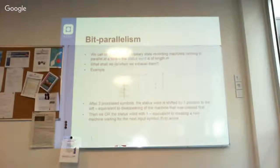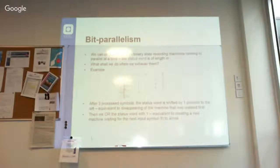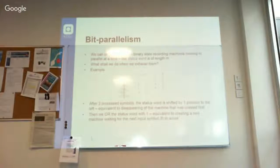Bit parallelism limits itself to N machines running in parallel, where N is the length of the pattern. The machine is assigned to the pattern — we don't care about the search string. These N status bits are called the status word, and we are going to demonstrate how this works.